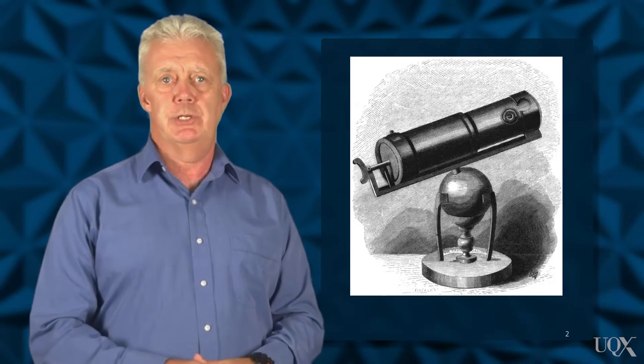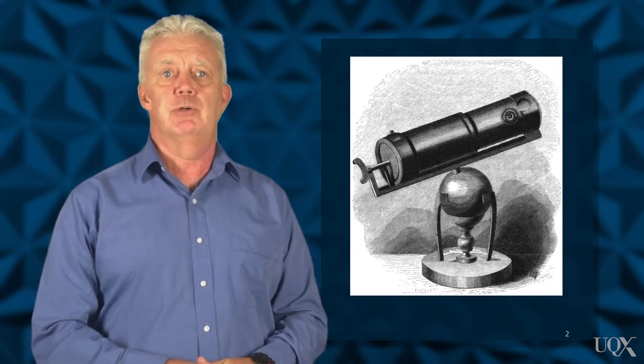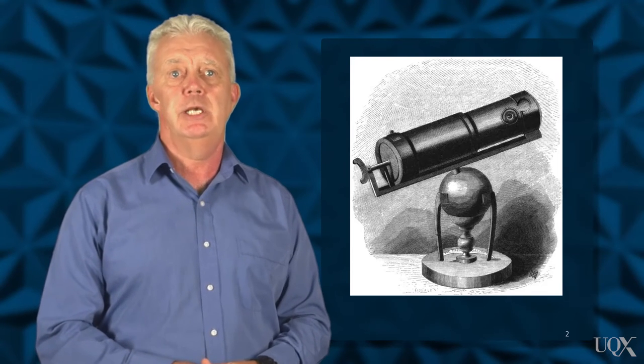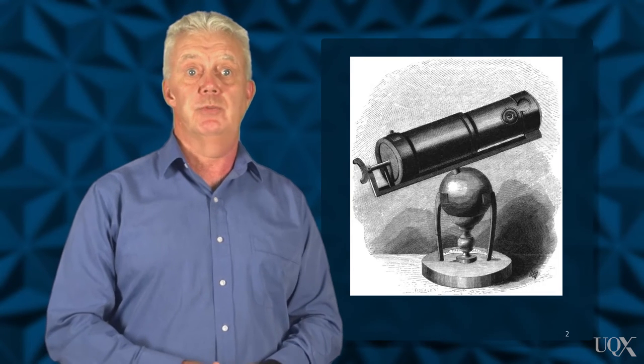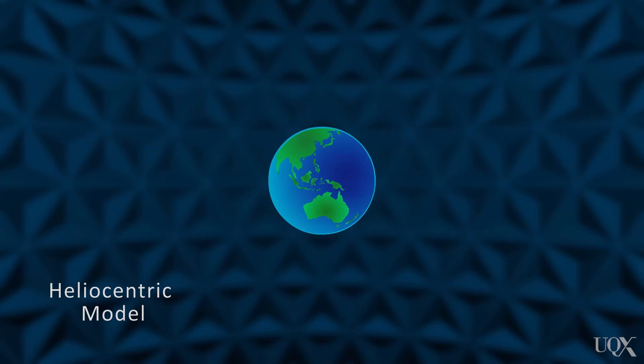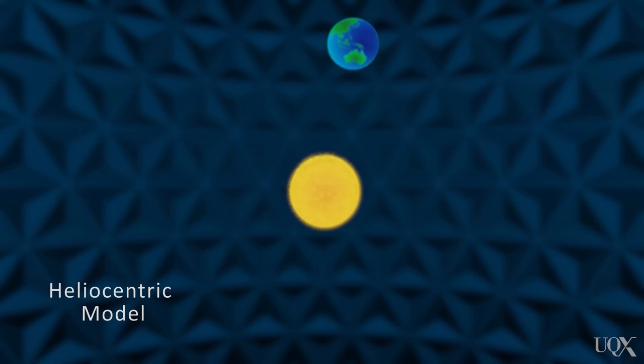It was not until the 16th century that Copernicus, after many hours of observing the heavens systematically with a telescope, came up with the theory that the Sun was at the centre of the solar system. Unlike the geocentric theory of Ptolemy, the heliocentric theory had the Earth revolving around the Sun. This theory could explain the motion of the planets.